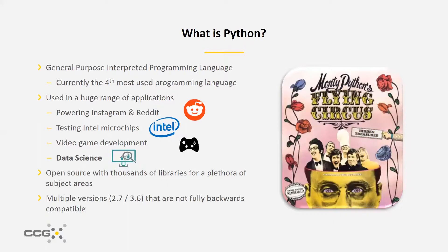Intel uses Python to test their microchips, it's widely used in video game development, and it's also very popular in data science. It's open source, which means that the source code is visible to the public, so anybody can create their own implementation of Python or write their own packages for it — and there are a lot of packages out there.